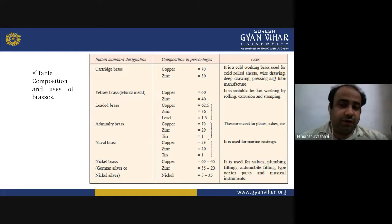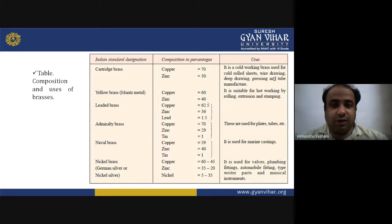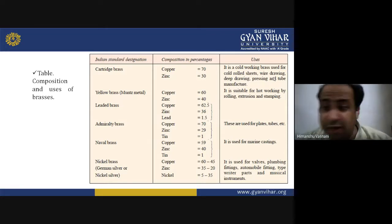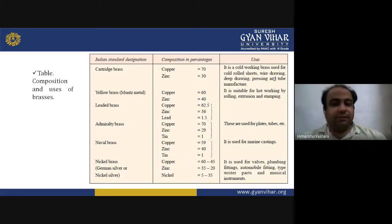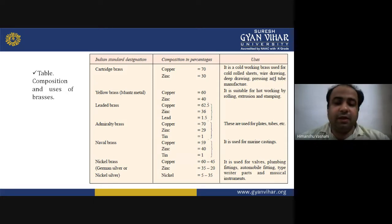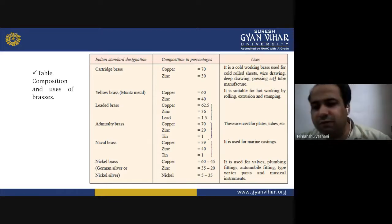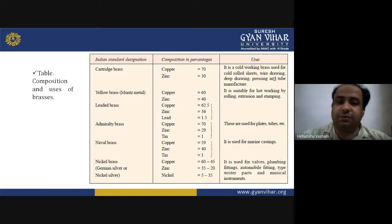Leaded brass contains 62.5% copper, 36% zinc and 1.5% lead. Admiralty brass contains 70% copper, 29% zinc and 1% tin. Naval brass contains 59% copper, 40% zinc and 1% tin, used for marine applications. Nickel brass, also called German silver or nickel silver, contains 62–43% copper, 32–55% zinc and 5–35% nickel, used for plumbing fittings, automobile fittings, marine, typewriter and musical instruments.